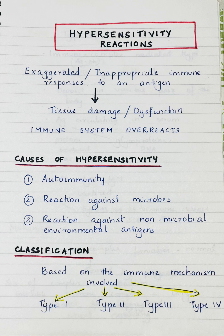Another reason could be reaction against microbes. In some cases, the immune response against microbes can cross-react with the body's own tissues via microbial antigens. For example, after a streptococcus infection, antibodies can mistakenly attack the heart tissues and cause rheumatic fever. A third reason could be reaction against non-microbial environmental antigens, where the immune system reacts to harmless substances like pollen, dust, food, or any drugs.